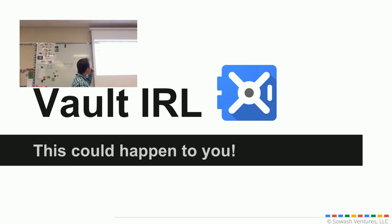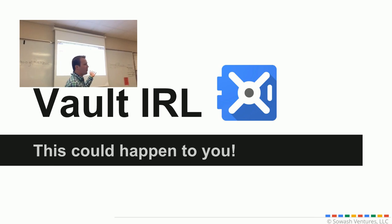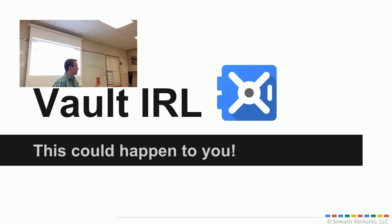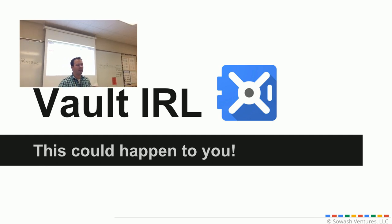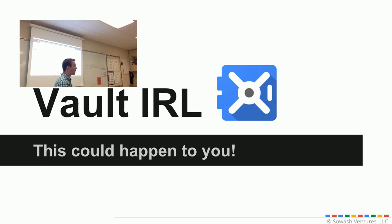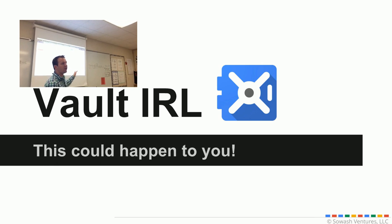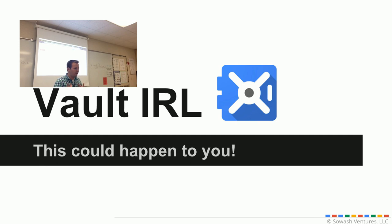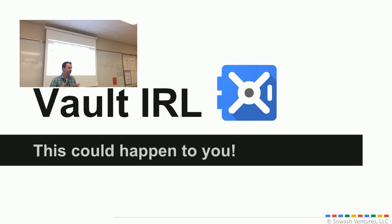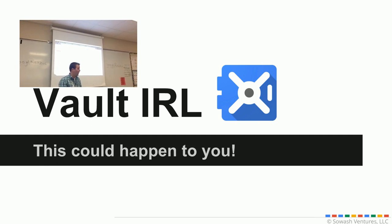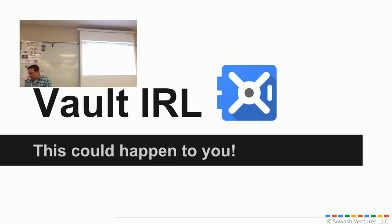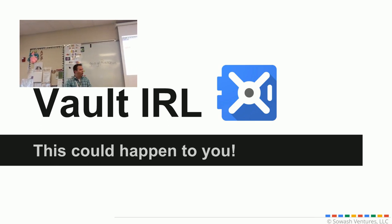Worth pointing out that even before I put the hold on, if Eustace goes in and deletes messages, it doesn't matter — because Vault has already collected those messages. A user deleting a message from their account does not impact the Vault archive. The hold is simply making sure that Vault doesn't purge on schedule the data based on the retention policy you've set. In this instance it probably wouldn't be a big deal, because who's going to report a bullying incident from seven years ago? All right, so now we have our hold. Now we're going to go in and begin searching.